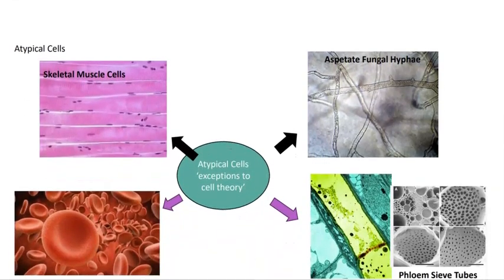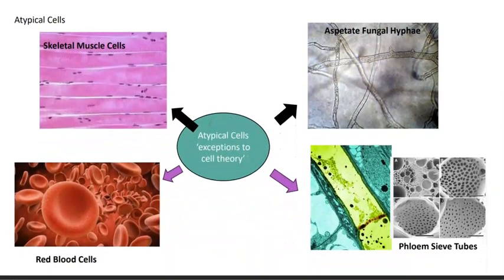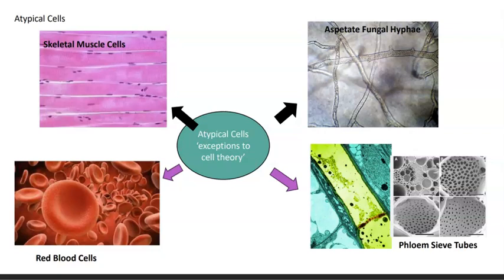Let's look at these challenges to the cell theory. We discussed earlier how, through deduction, we can say that all living things are made of cells, and we have an idea of what a typical cell should look like. One classic expectation is that a eukaryotic cell should have one nucleus — and yet there are multiple challenges to this.